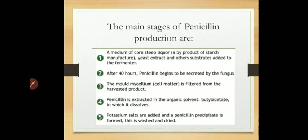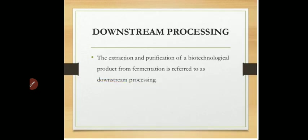So up till now we have seen the upstream process of penicillin production, covering the actual production of penicillin. Now we will start with downstream processing. The downstream process is the extraction and purification of a biotechnological product from the fermentation process — once the product is produced, its extraction, removal, and purification are done in downstream processing.